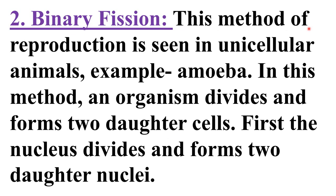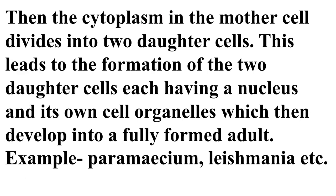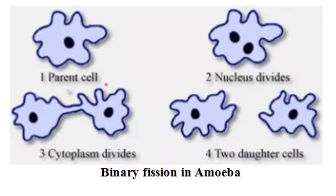Binary fission: this method of reproduction is seen in unicellular animals — single-celled organisms such as amoeba. An organism divides and forms two daughter cells. First the nucleus divides into two daughter nuclei, then the cytoplasm divides into two daughter cells, each having a nucleus and cell organelles, which develop into a fully formed adult. Examples include paramecium and leishmania.